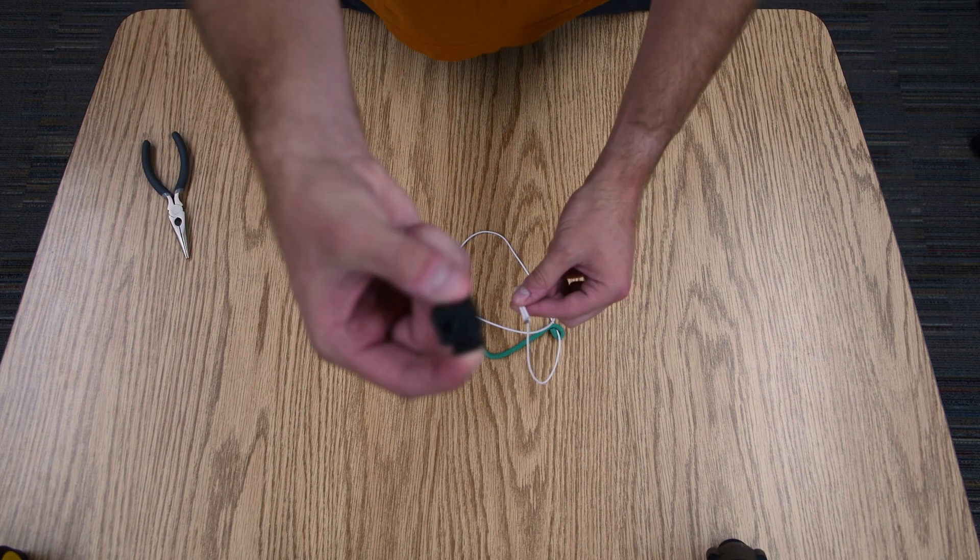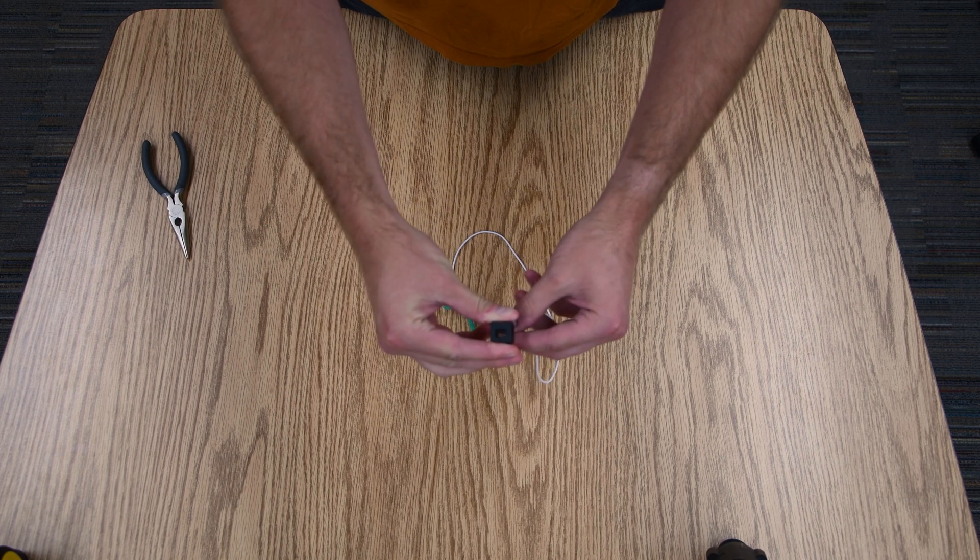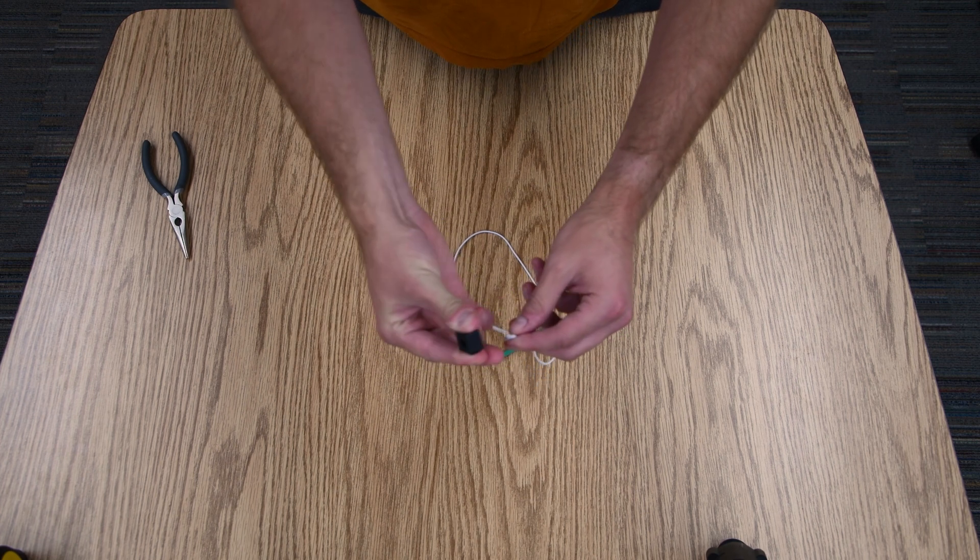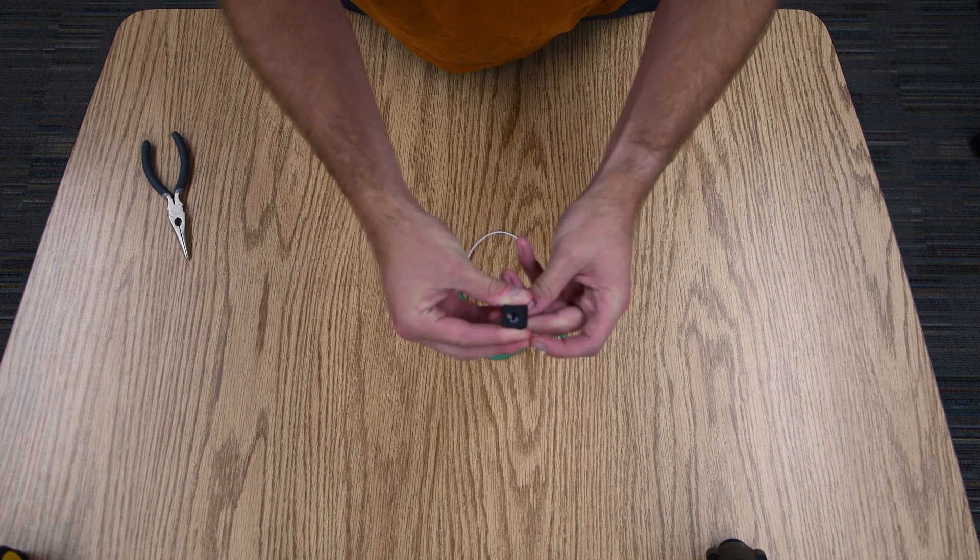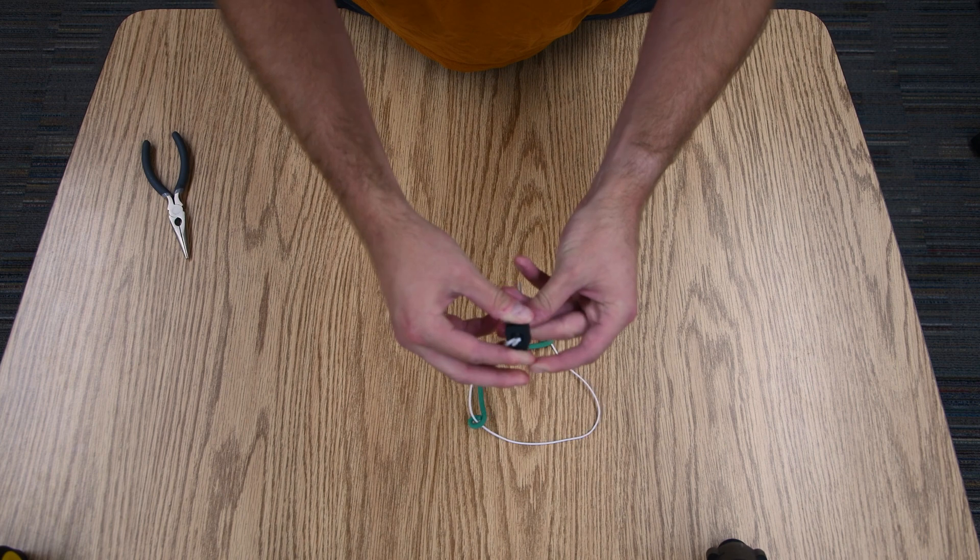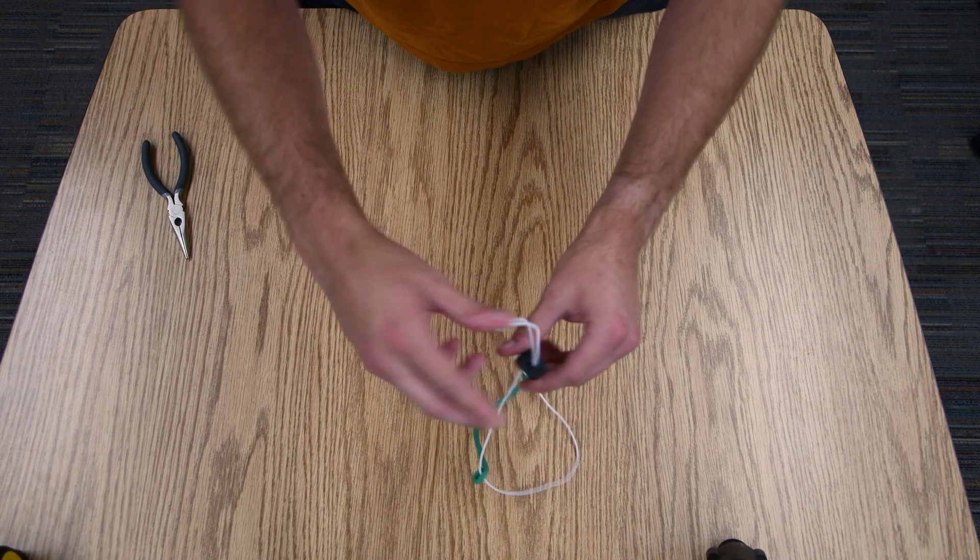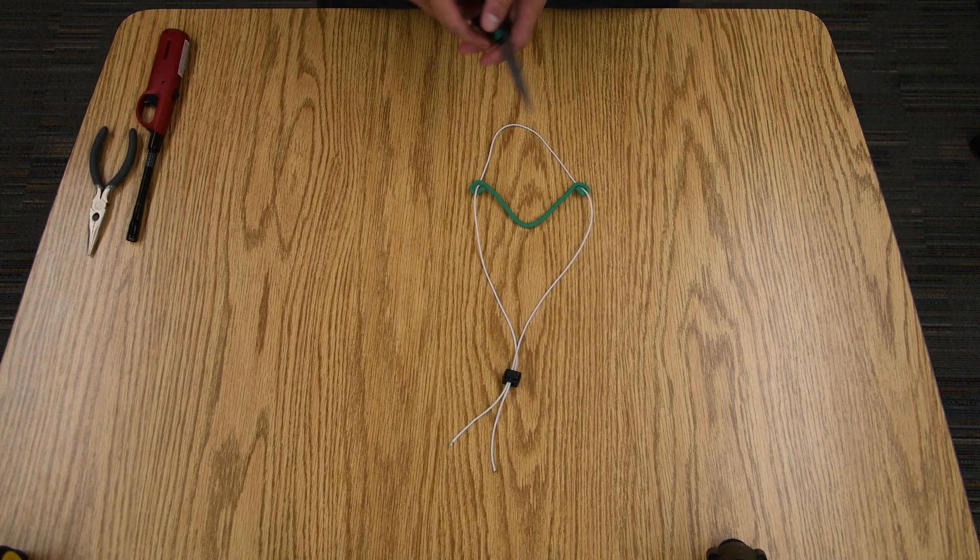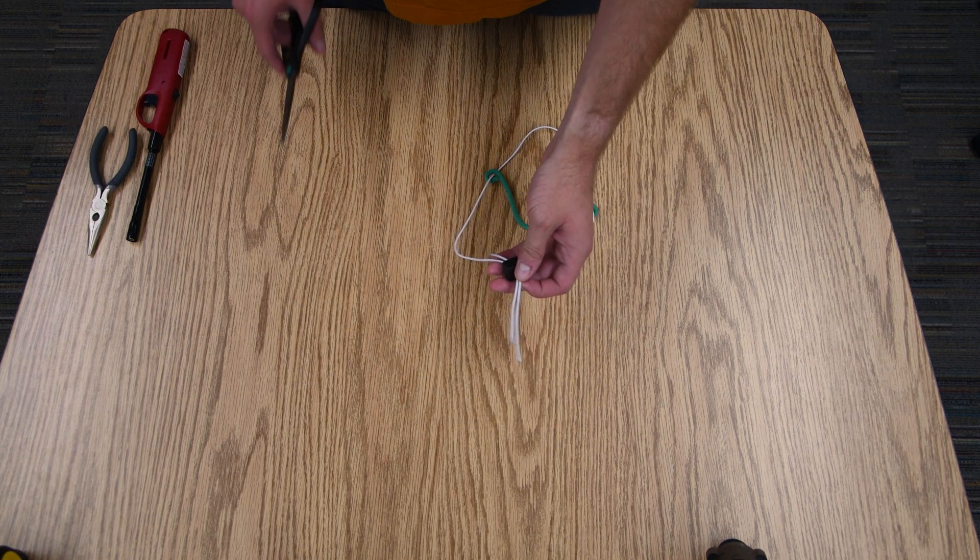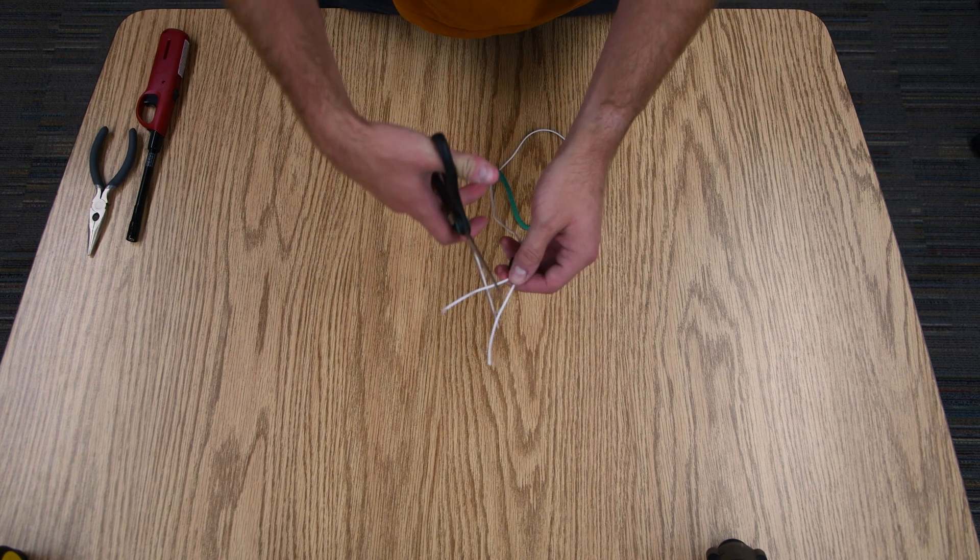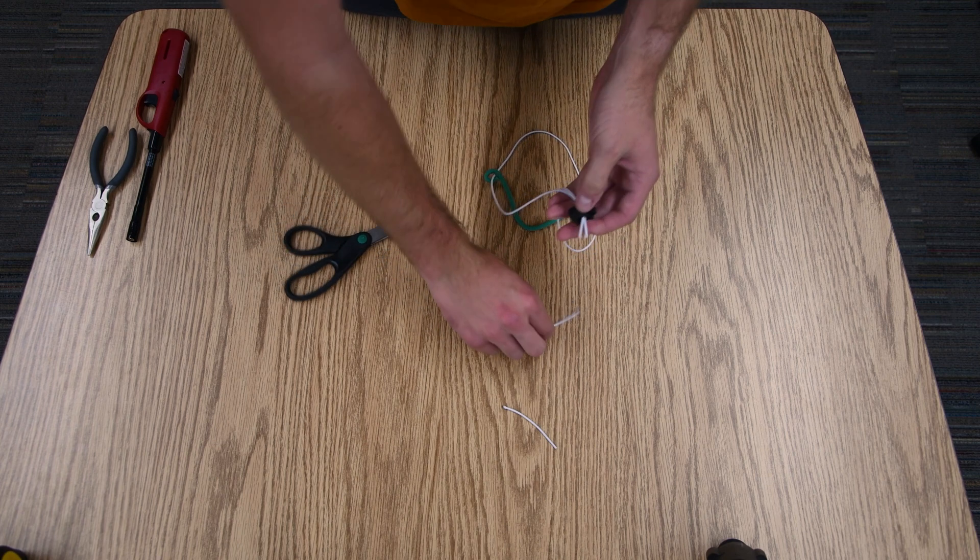Next we're going to take a clamp and we're going to clamp the two pieces of elastic material together. Oftentimes you'll have some extra material on the tag end. And what you can do for that is take a pair of scissors and just cut it, get rid of the extra material.